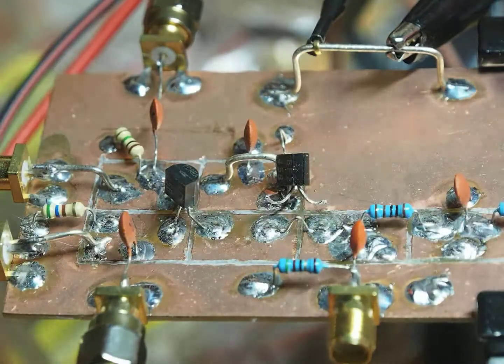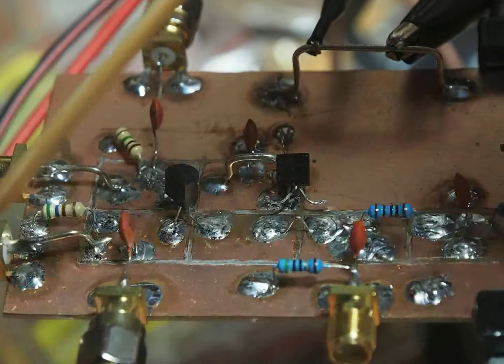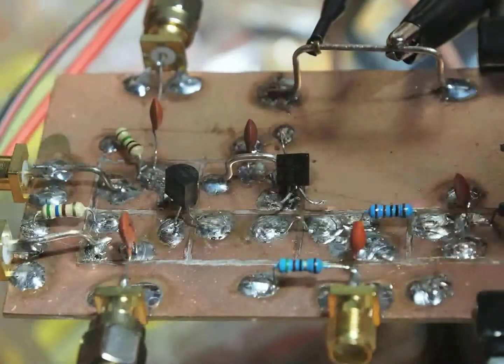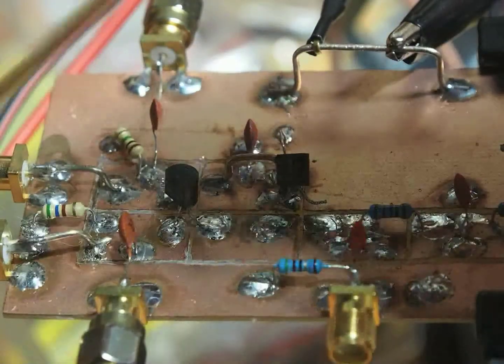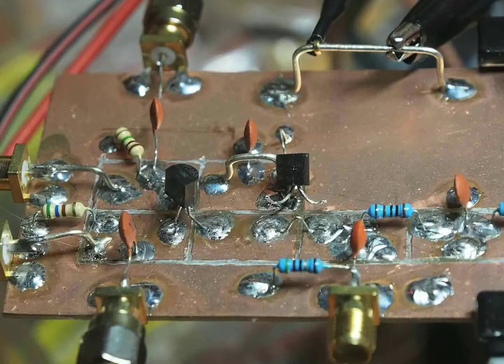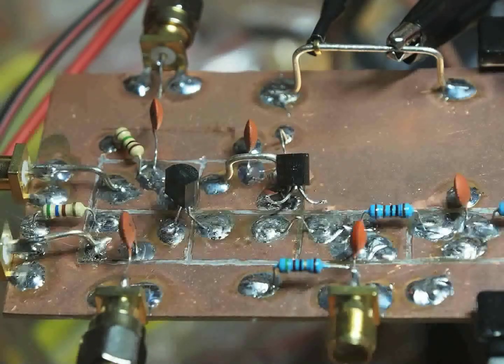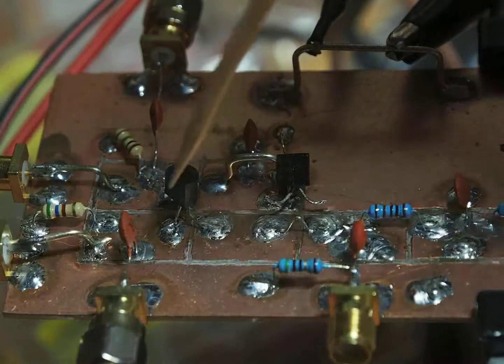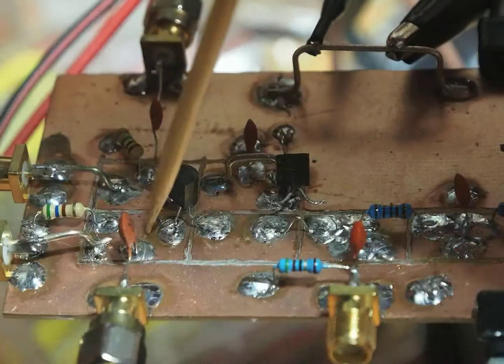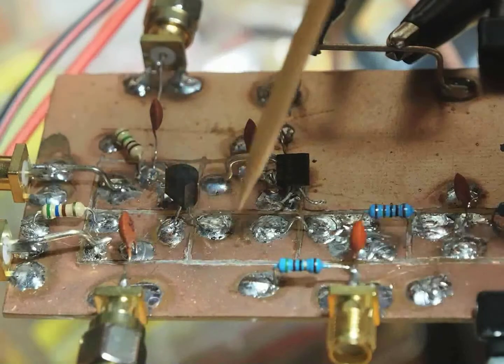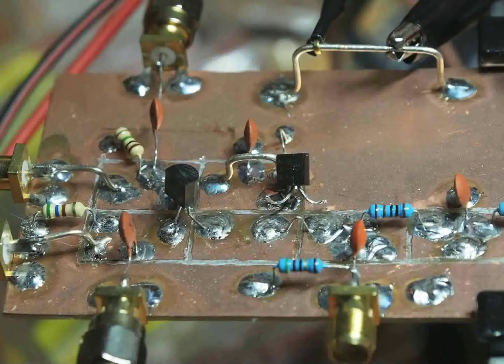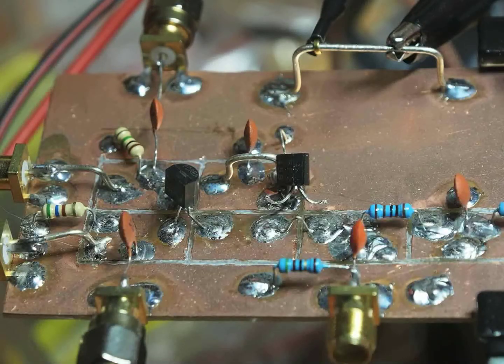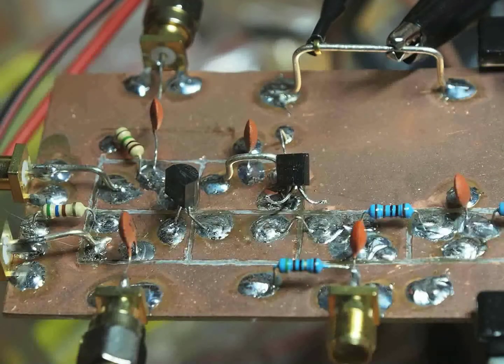And measure it with this. This is channel 1, the yellow channel. This is channel 2, the purple channel. Also we will measure the voltages, the DC voltages at the source and the drain to be used later. Alright, let's get started.